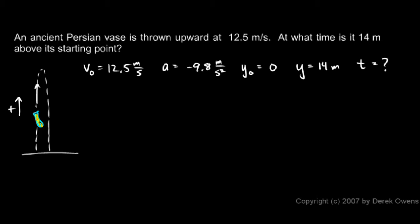So the setup is very similar to the previous problem. We can use y equals y zero plus v zero t plus one half at squared. And let's put in the numbers.